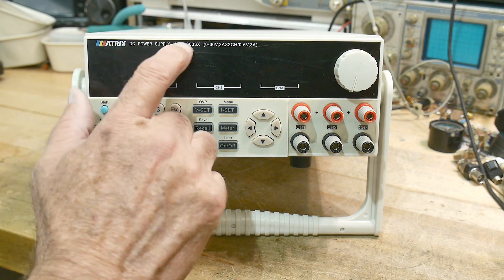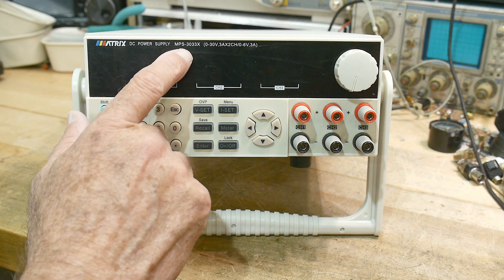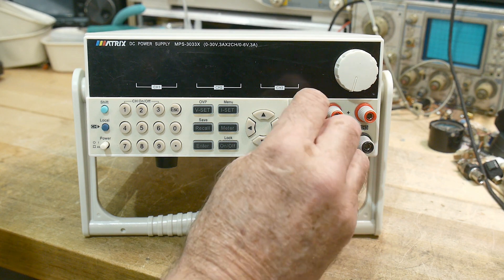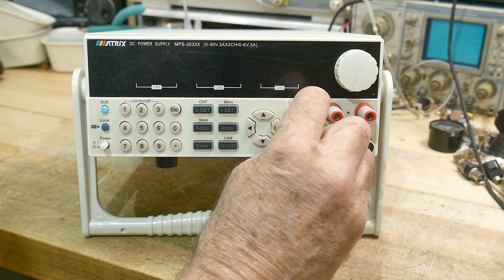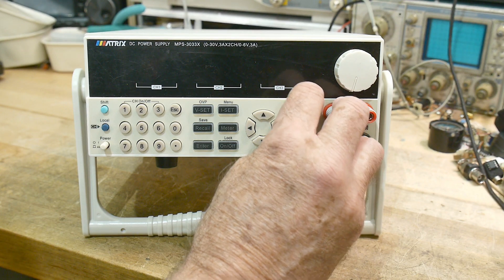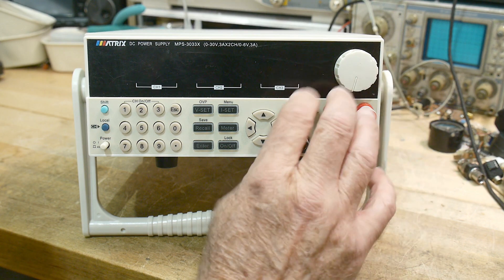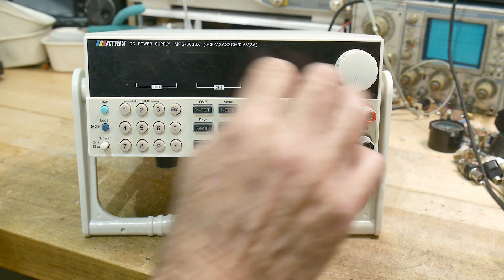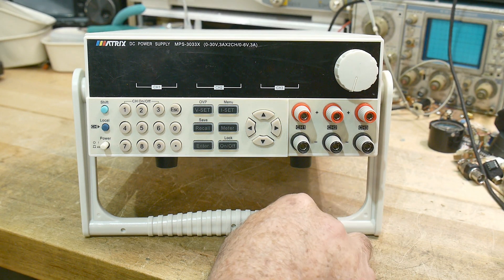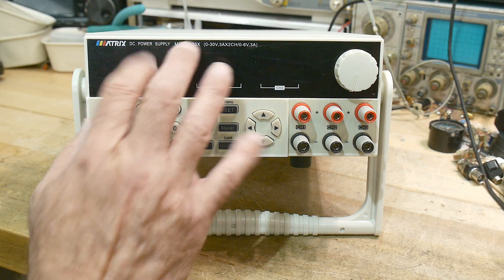This one is a triple power supply, the MPS-3033X. So we have 0 to 30 volts 3 amps on two channels and 0 to 6 volts 3 amps on one channel. So they're all three amp channels: 0 to 30, 0 to 30, and 0 to 6.